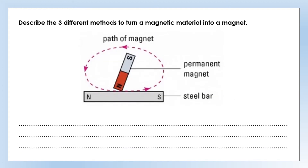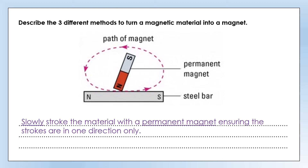How do we magnetize a material? The first and simplest way is to take a permanent magnet and slowly stroke the material with it, ensuring the strokes are in one direction only. You use the north pole and stroke from one end to the other, and keep doing that. This will eventually turn the steel bar into a magnet. Steel is a magnetic material and it's actually quite hard to magnetize, but if you do this enough it will work.